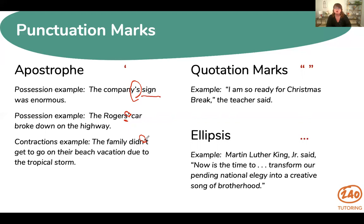Quotation marks are used to separate a direct quotation from the rest of the sentence. For example: 'I'm so ready for Christmas break,' the teacher said. Sometimes you will see single quotation marks if they're within a larger quotation. Finally, an ellipsis is used to omit words from a quotation. For example, Martin Luther King said 'now is the time to … transform our pending national' — and the rest of the sentence. We omitted parts and put an ellipsis there.